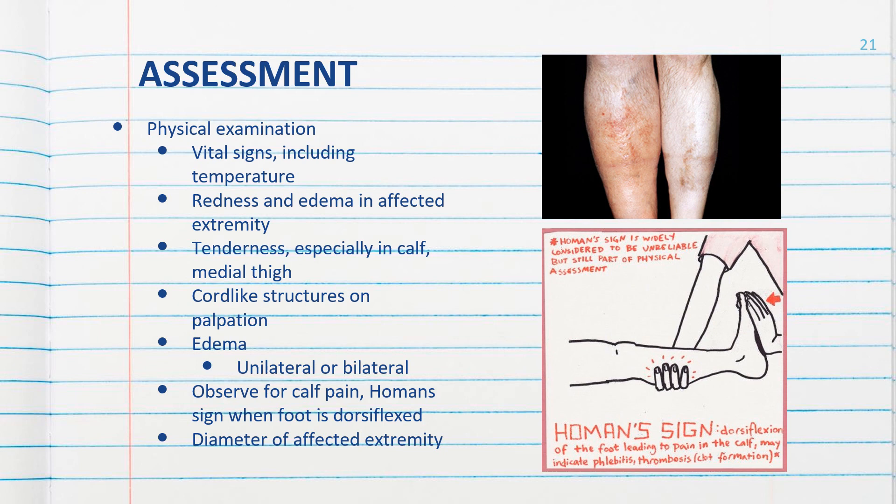Note the presence of edema and whether it is unilateral or bilateral. You can measure the diameter of the affected extremity. Observe for calf pain or the Homans sign when the foot is dorsiflexed.